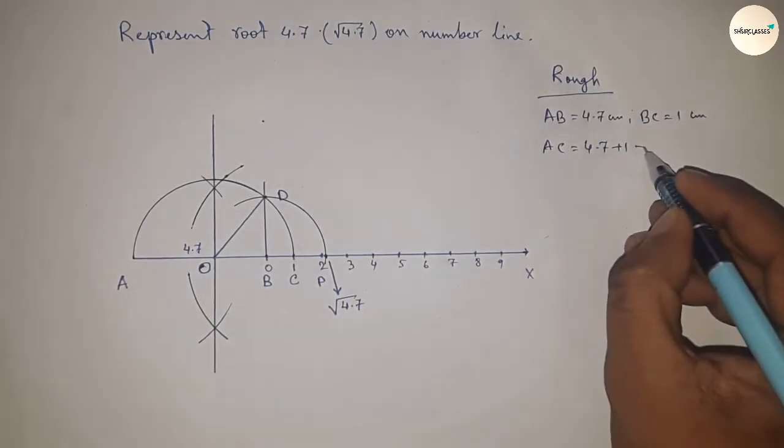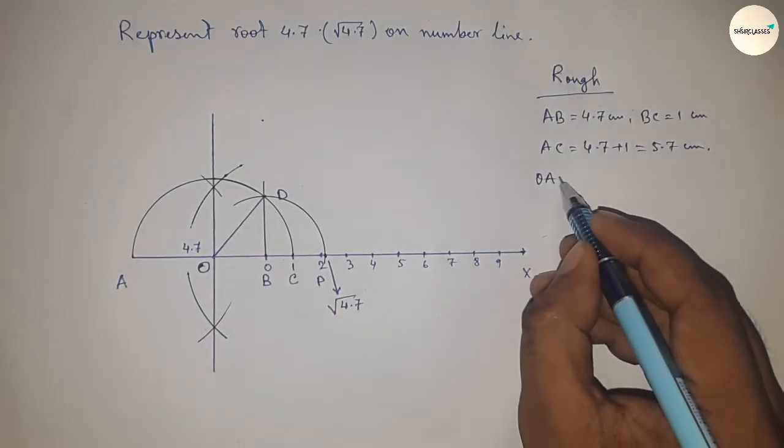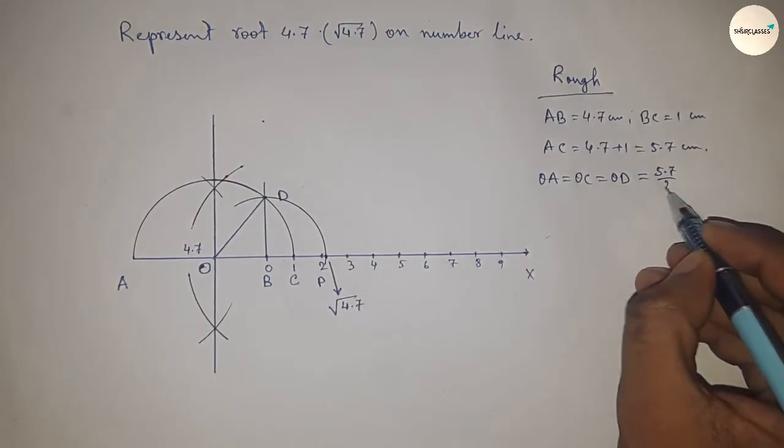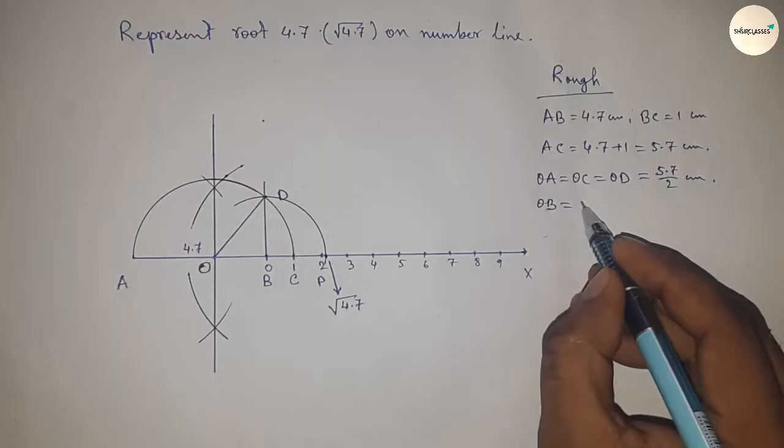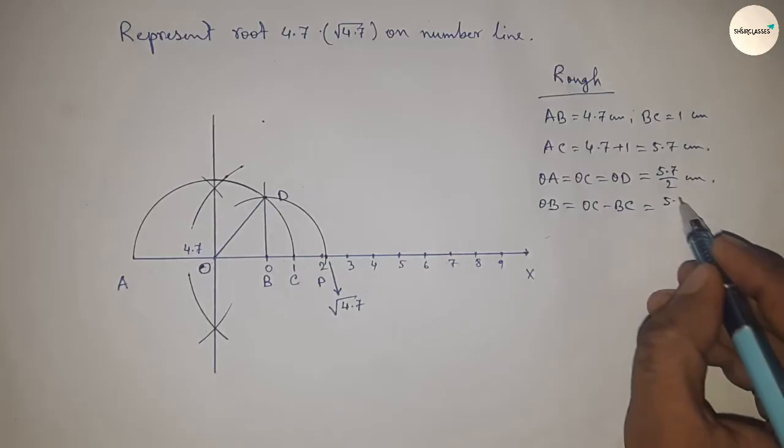The radius OA, OC, and OD all equal 5.7 by 2 centimeters, since O is the center of the semicircle.